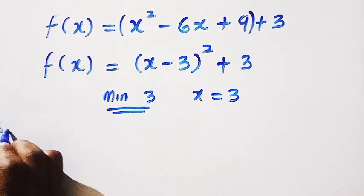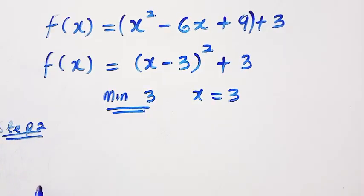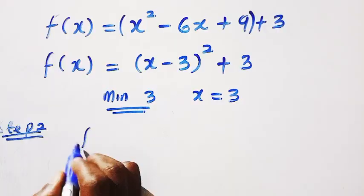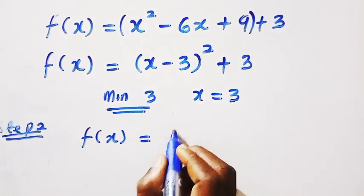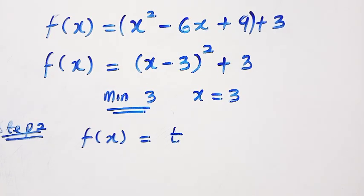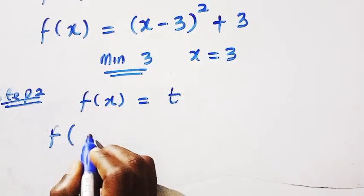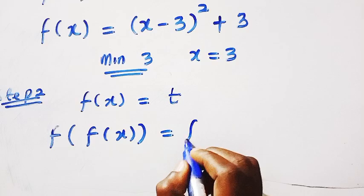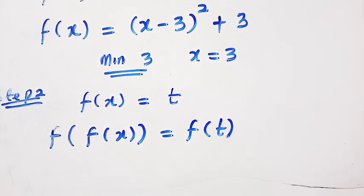So in the second step, suppose I let from here, we have f of x, let me let f of x to be equals another letter. If I choose t, then I want to take the composite of this. If I introduce another f, so we have f of f of x equals f of t. But how can I get f of t? It's very easy.